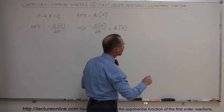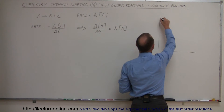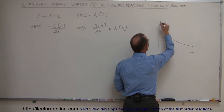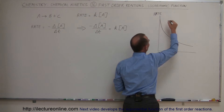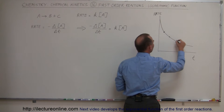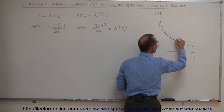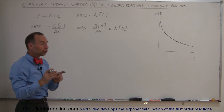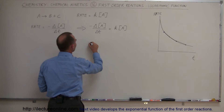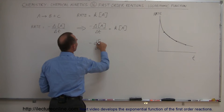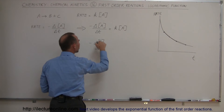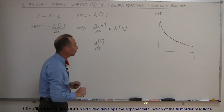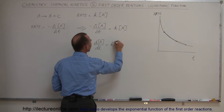Previously, when looking at concentration and rate changing, we could pick points on the curve and measure values, giving us straight-line approximations between points — but not the exact relationship. What we want is the exact slope anywhere along that curve. So we write this in differential form: minus the derivative with respect to time of the concentration of A — the instantaneous change — equals K times the concentration of A.